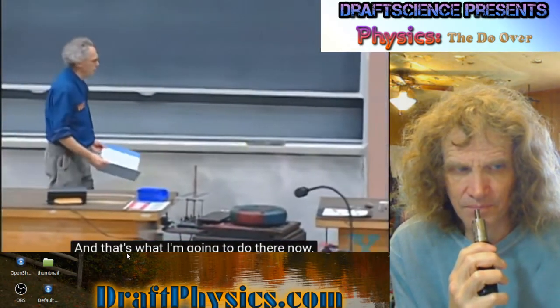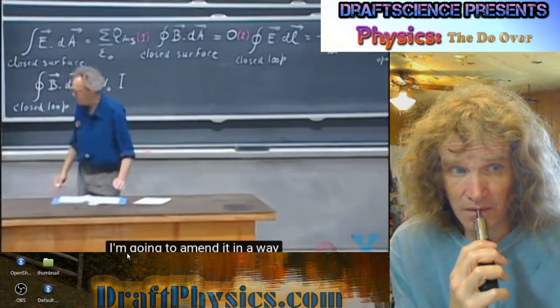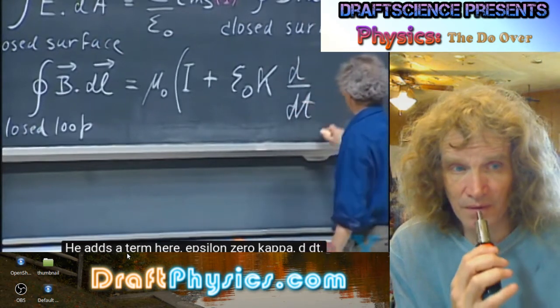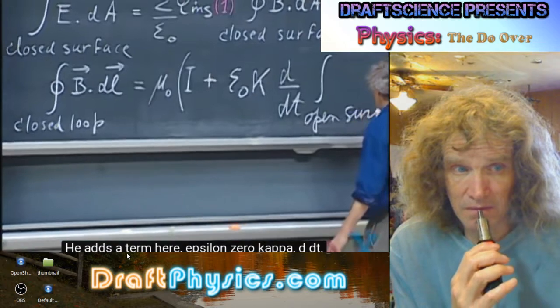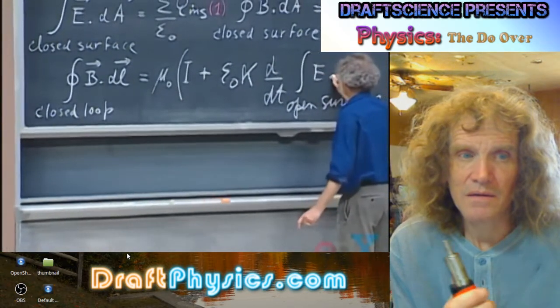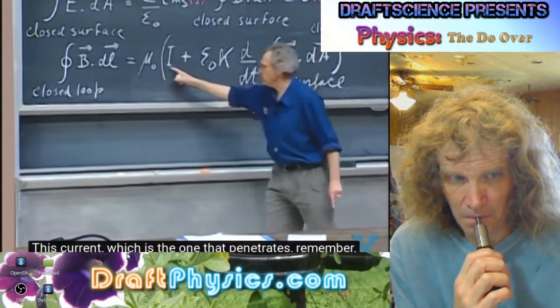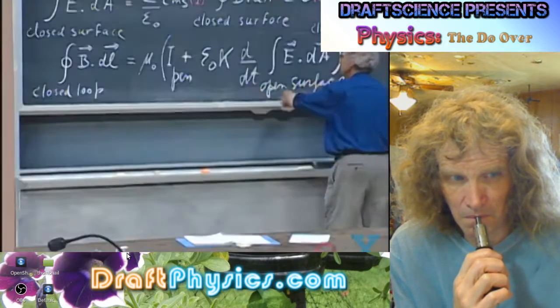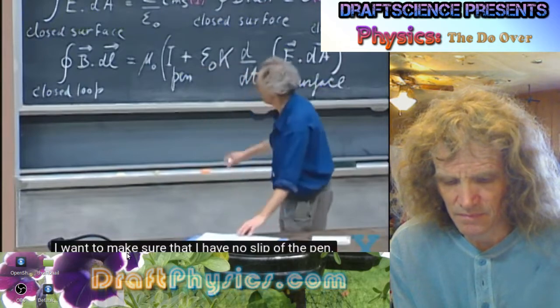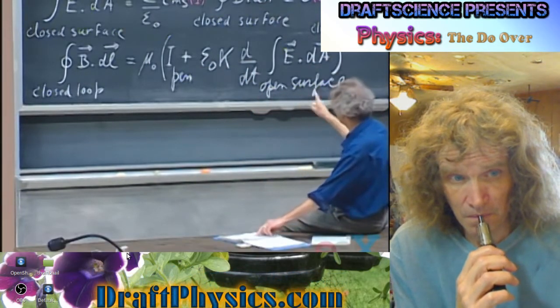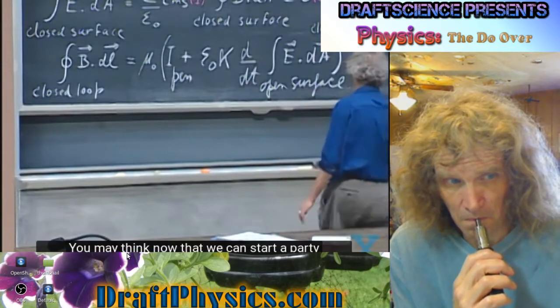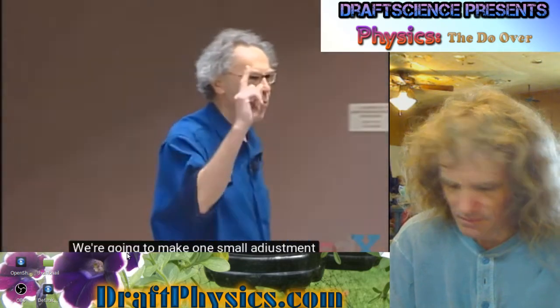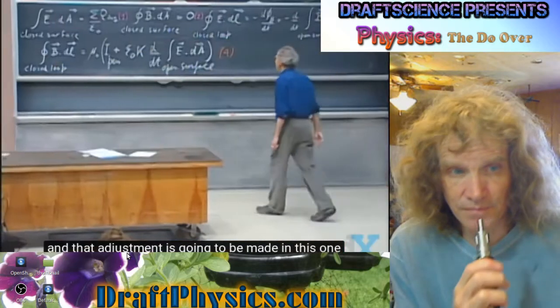And Maxwell reasoned, Faraday's law tells me that a changing magnetic flux gives rise to an electric field. So he says maybe a changing electric flux gives rise to a magnetic field. And I want to remind you what an electric flux is. Phi of E is the integral of E dot dA. And so Maxwell suggested that we have to add a term which contains the derivative of the electric flux.